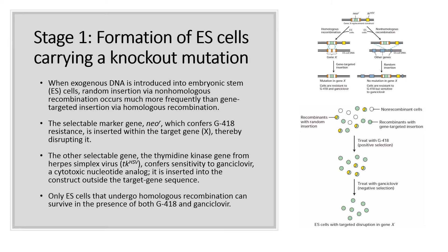One of these genes, NEOR, which confers G418 resistance, is inserted within the target gene X, thereby disrupting it. The other selectable gene, the thymidine kinase gene from herpes simplex virus, or TKHSV, confers sensitivity to gancyclovir, a cytotoxic nucleotide analog. It is inserted into the construct outside the target gene sequence.